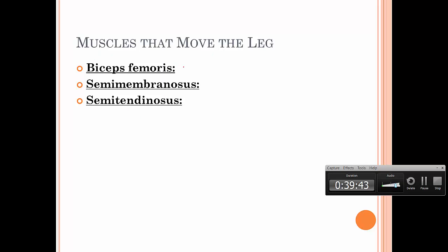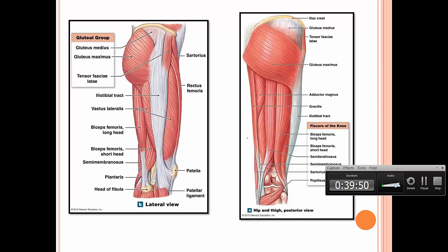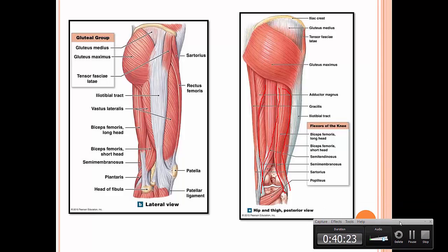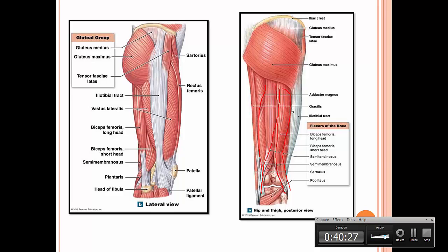Next are the muscles that move the leg — the hamstrings: biceps femoris, semimembranosus, and semitendinosus. From a posterior view, biceps femoris has two heads and runs laterally. The other two muscles, semitendinosus and semimembranosus, each have one head and run medially. They are named because semitendinosus has a large tendon and semimembranosus has a large membranous portion — this will be very obvious to see in the lab.